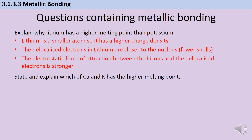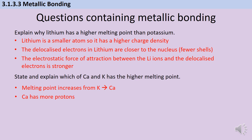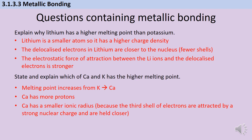In the second part of the question, I'm asked to both state and then explain which out of calcium and potassium has the higher melting point. Now I've got calcium in group 2 and potassium in group 1. Firstly, I need to say that potassium has a lower melting point than calcium. The first reason for this is because calcium has more protons — it has a higher nuclear charge.